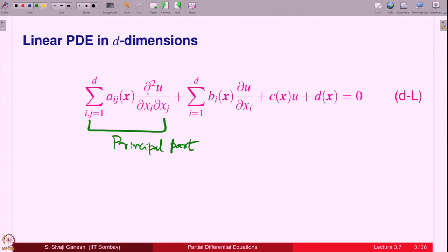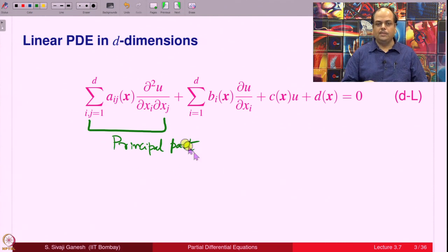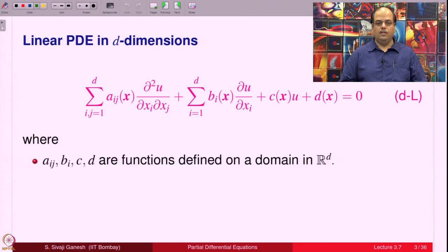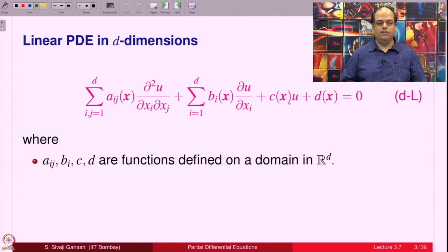When D equals 2, the classification and characterization of characteristic curves is based on the principal part. Similarly, the principal part plays a role even in higher dimensions, which is why it has been formally introduced. The remaining terms are called lower order terms because they involve derivatives of u of orders less than 2, that is, order 1 or no derivative.